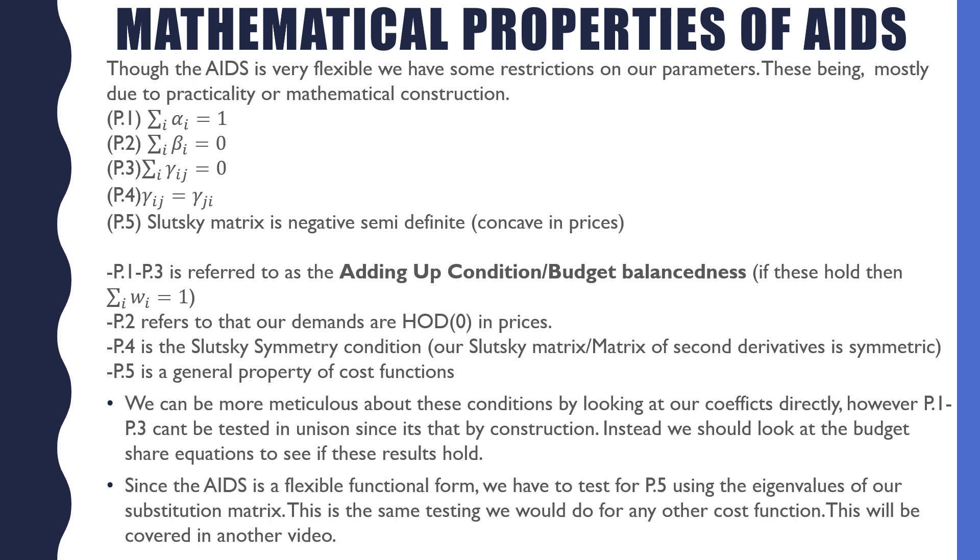We can be more meticulous about these conditions by looking at our coefficients directly. However, P1 to P3 can't really be tested in unison due to the construction of the almost ideal demand system. Instead, we should look at the budget share equations to see if these results hold. Since the almost ideal demand system is a flexible form, we should have to test for P5. That's really the only thing that we should test for using the eigenvalues of our substitution matrix. This is the same testing we would do for any other type of cost function or expenditure system. This will be covered in another video.